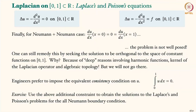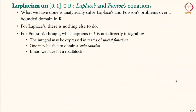The consistency condition must equal zero — this is the same as saying u is orthogonal to the space of constant functions via the L² inner product. There is a generalization to higher dimensions and manifolds related to algebraic topology and harmonic functions. As an exercise, you can use this additional constraint to solve both Laplace's and Poisson's problems for the all-Neumann boundary condition.